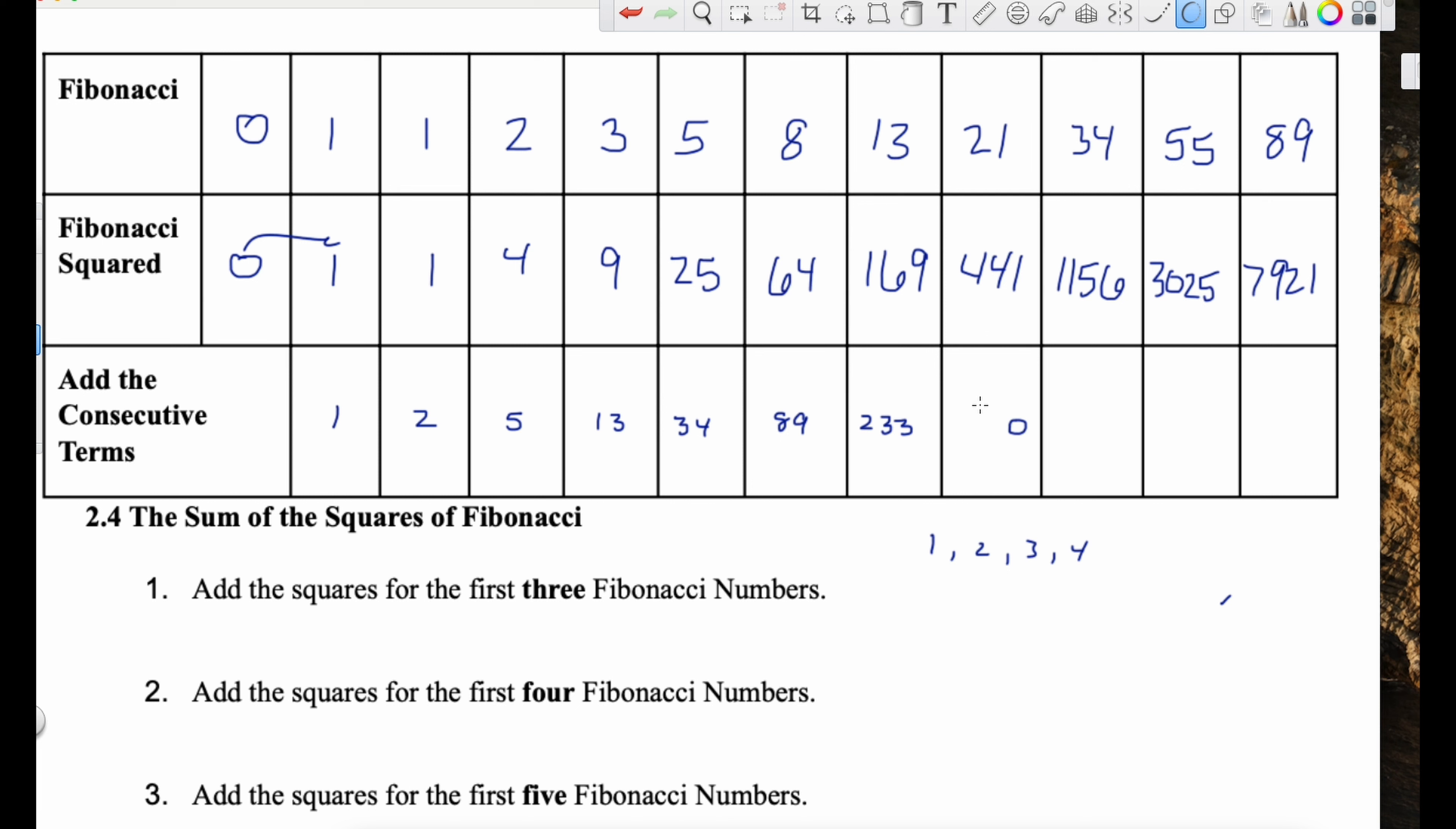Add the consecutive terms. So what does consecutive mean? We know consecutive numbers are 1, 2, 3, 4. These consecutive terms are one term, and then the next term, then the next term. These are consecutive. So we're going to add the two consecutive terms here. So let's do the first two. We have 0 and 1. If we add those together, we get 1.